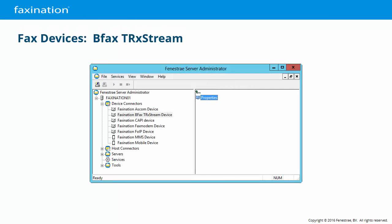The configuration for the FaxNation BFAX TR-Extreme device is launched from the Finestre Server Administrator under Device Connectors. Note: the name TR-Extreme was a marketing term that Brooktrout used when it first introduced the TR1034 series of cards in the early 2000s. The TR1034 eventually replaced the older TR114 cards, which are now obsolete. The name TR-Extreme hasn't been used to sell TR1034 cards in over a decade, but FaxNation has retained the name for legacy reasons.